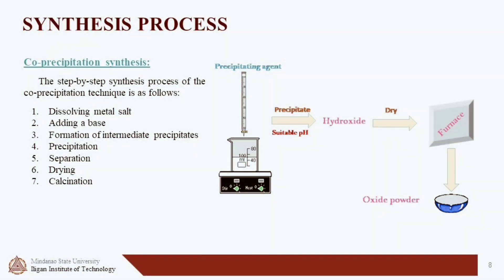The co-precipitation technique is a simple, economical, and industrially viable method for synthesizing metal oxide nanoparticles and other technologically important oxide materials. The step-by-step synthesis process of the co-precipitation technique is as follows: first, dissolving the metal salt; second, add the base; third, formation of intermediate precipitates; fourth, precipitation; fifth, separation; sixth, drying; and lastly, crystallization.